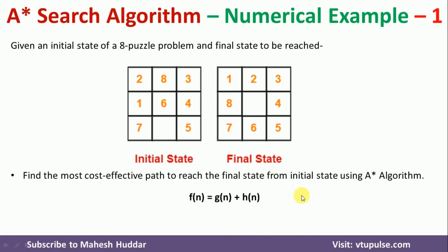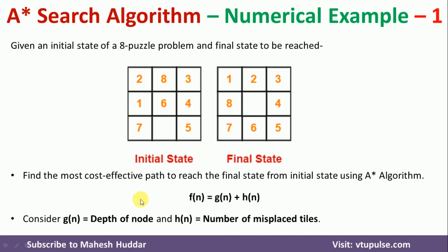We want to reduce the value of the function f = g + h. To do that, we need to know the values of g and h. It is given that g is equivalent to the depth of the node and h is equivalent to the number of misplaced tiles. So g is the depth of the node and h is the number of misplaced tiles at the nth node.